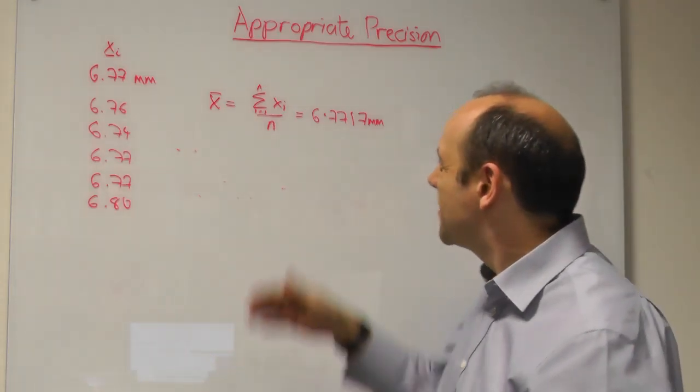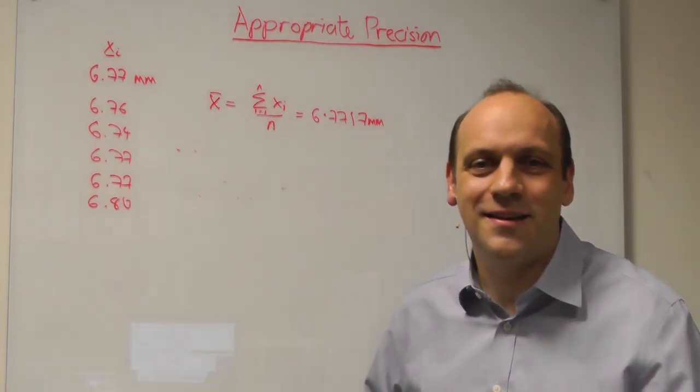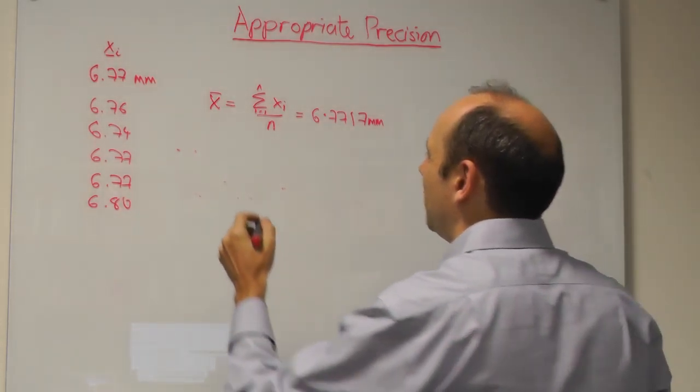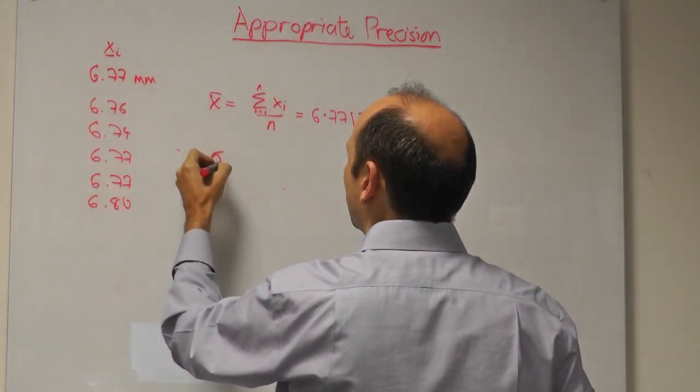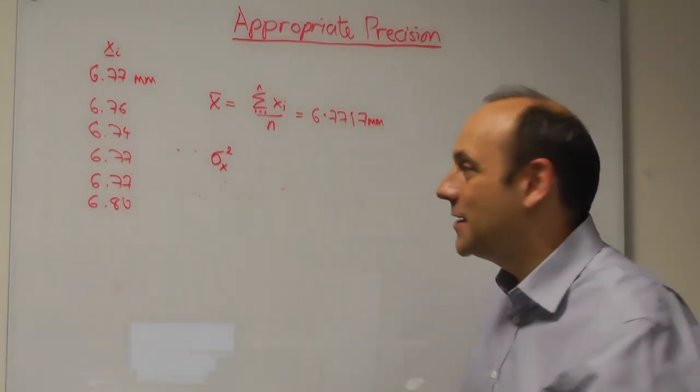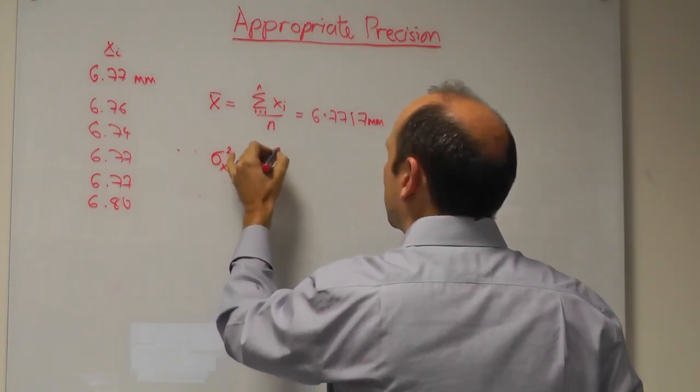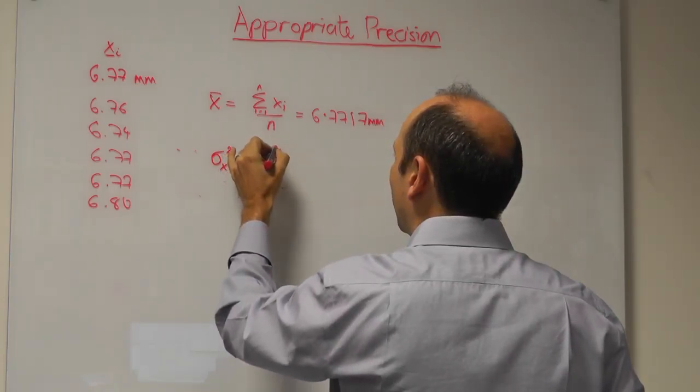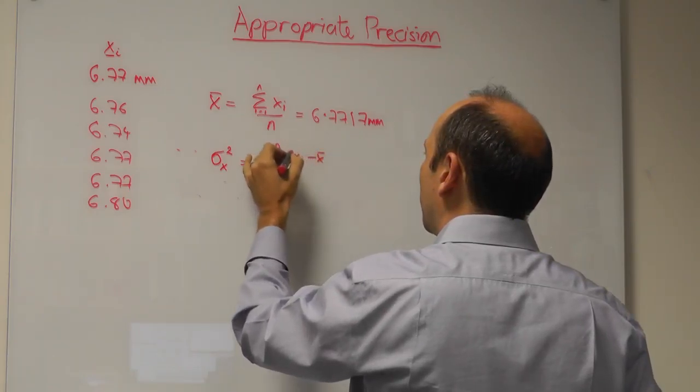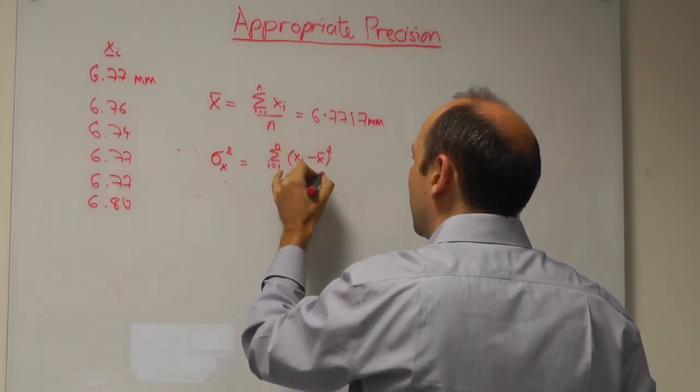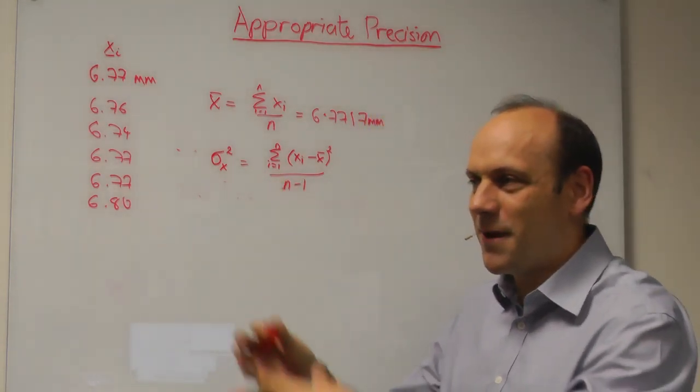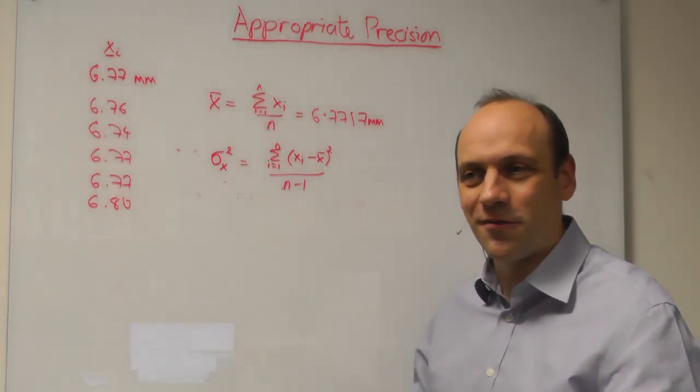Now, the other thing I want to know, that still doesn't get me to the uncertainty in the measurement. I could take also the standard deviation. The standard deviation squared, the uncertainty in X squared, is found by taking the sum from i equals 1 to n of the differences between the Xis and X-bar, all squared, divided by the number of observations minus 1.